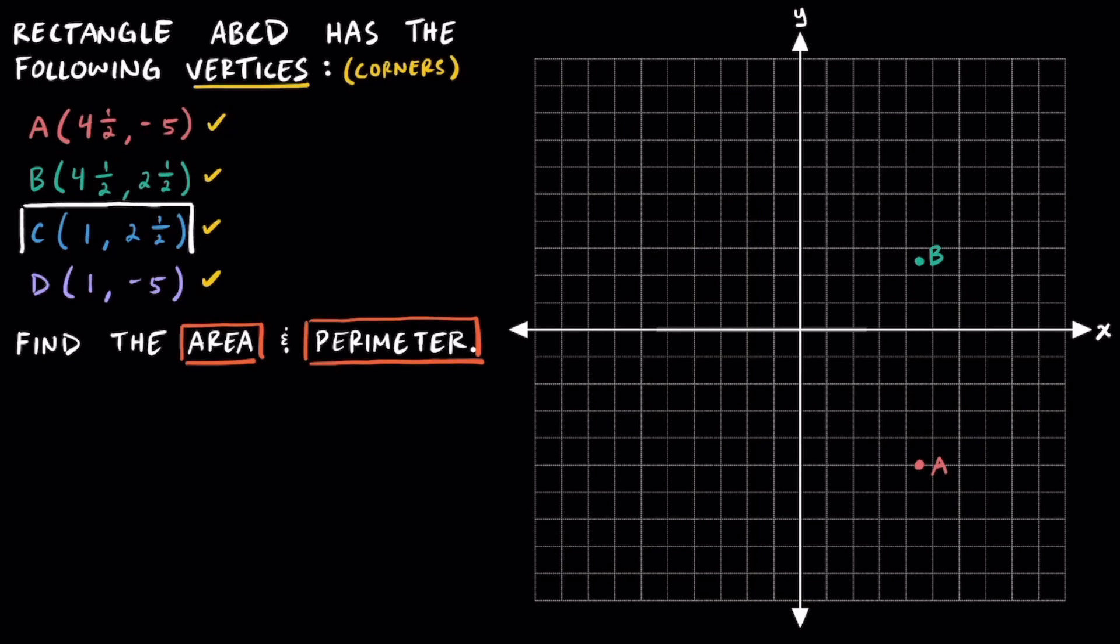For point C, which is located at positive one comma positive two and a half, we'll move one unit to the right from the origin and then two and a half units up. This one's also located in quadrant one.